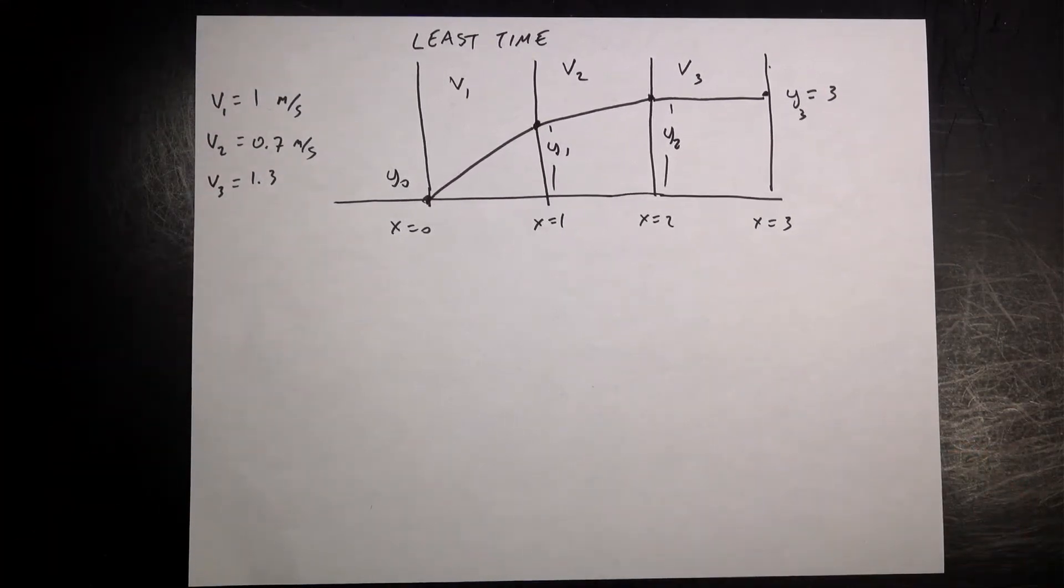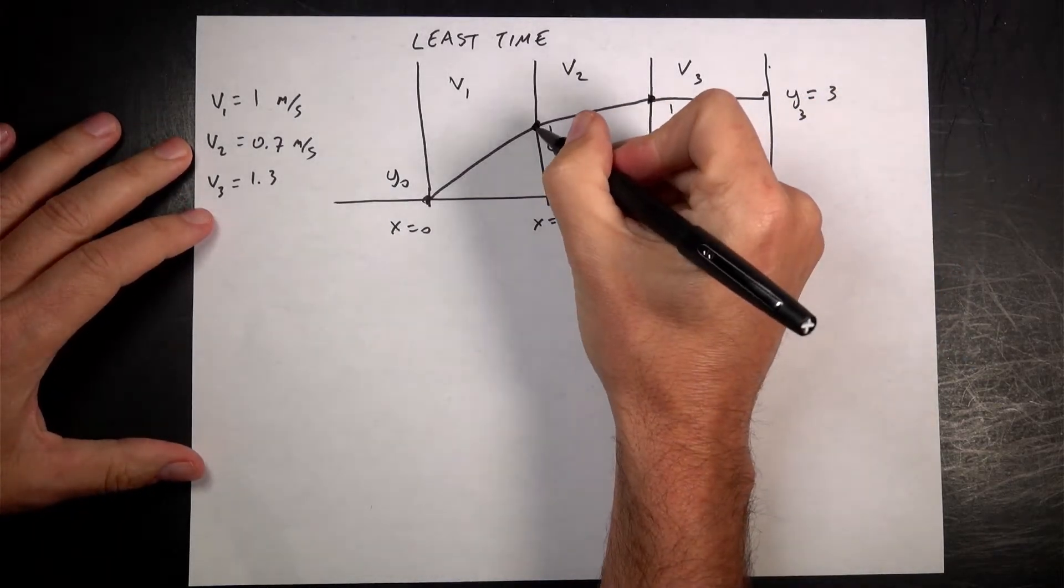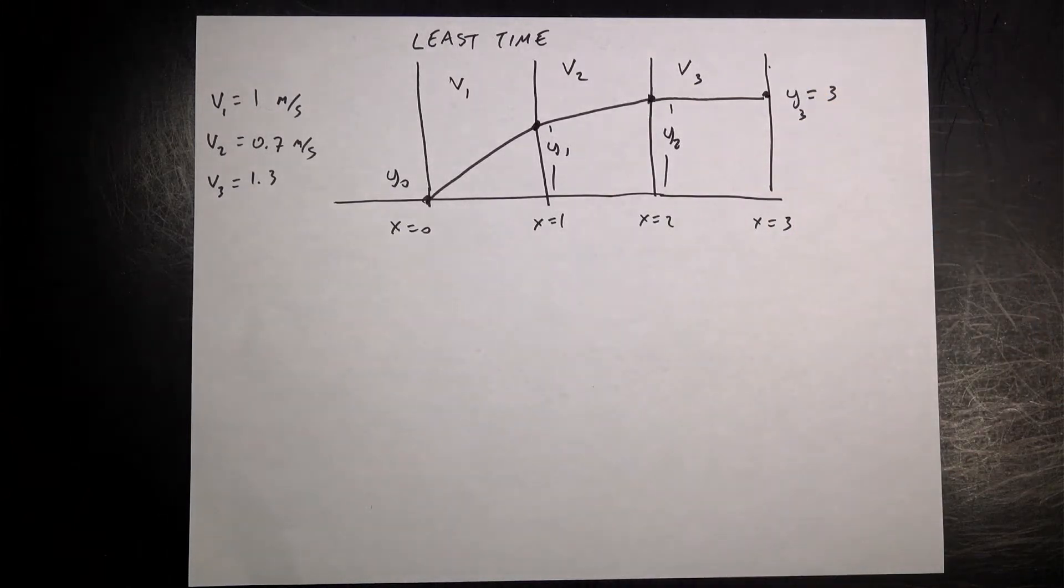I'm starting to do Lagrangian mechanics in classical mechanics and I saw this problem that was kind of a lead up to the variational principle and I thought I'd do it because I thought it looked fun.